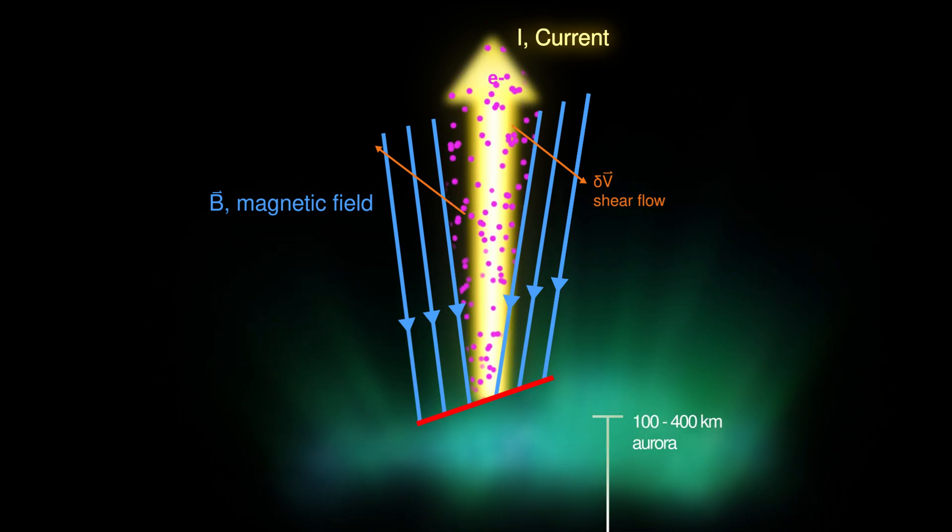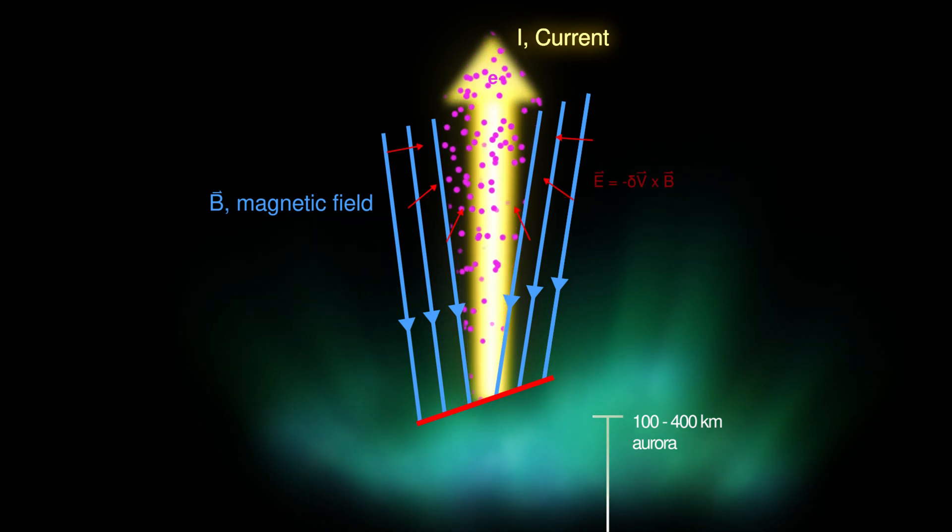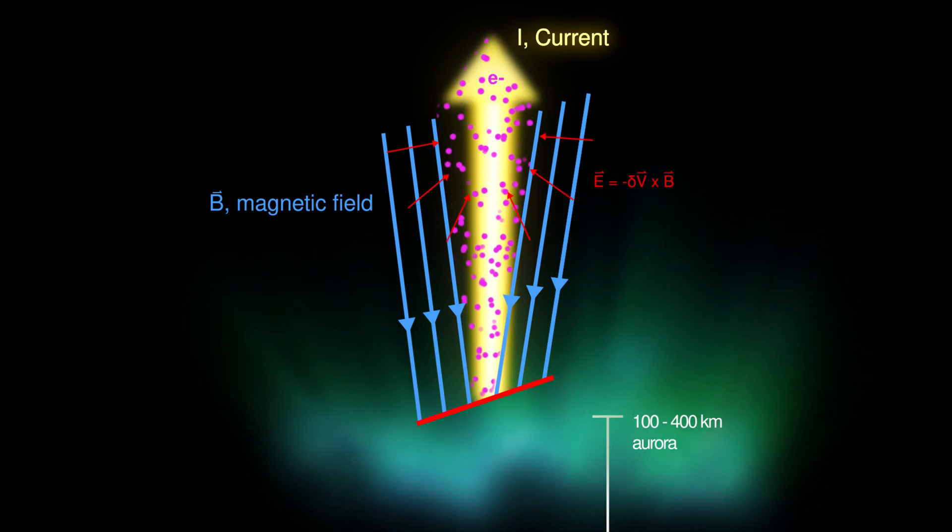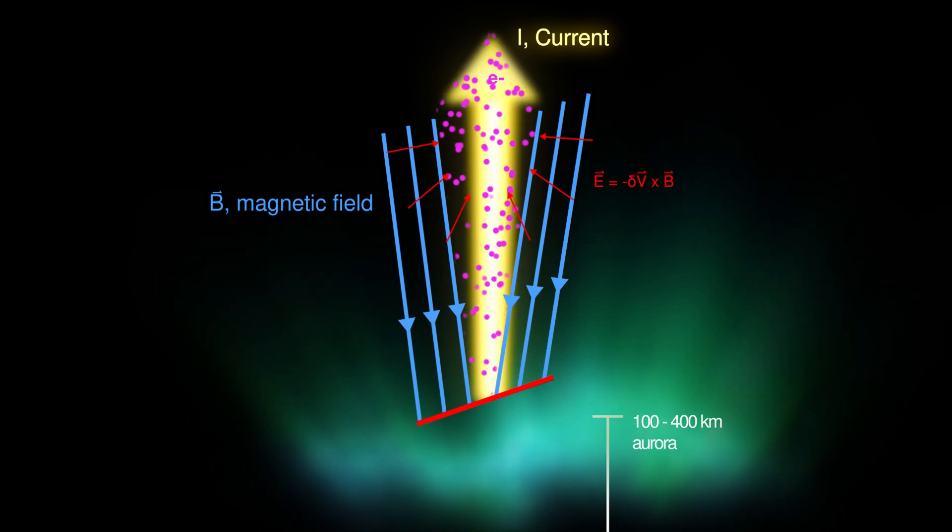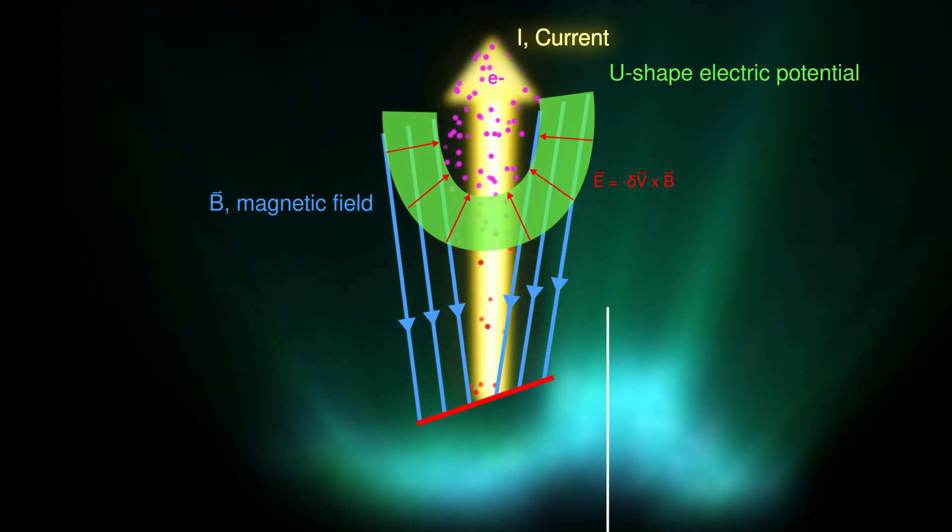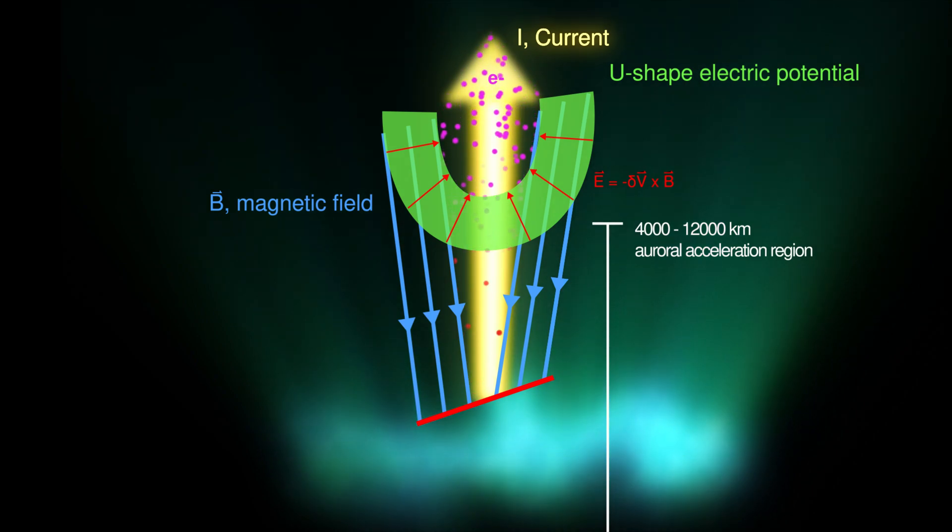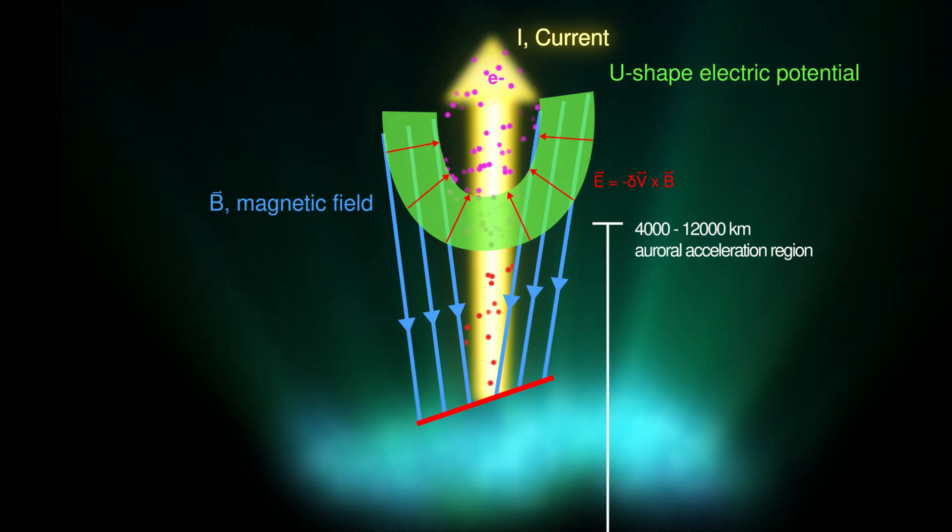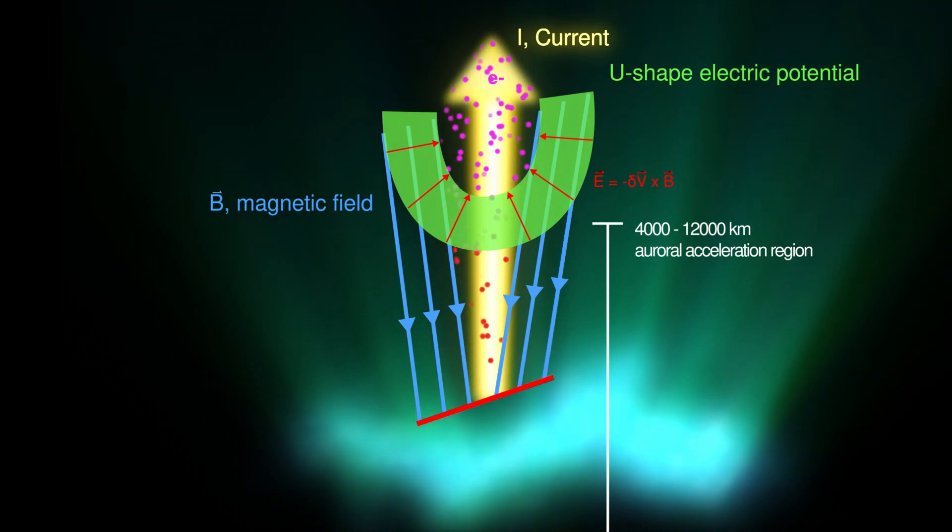Meanwhile, scientists also realize that the same field line dragging effect can generate electric fields pointing toward the current. This electric field causes a band of electric potential that closes at the lower end, spanning altitude from 4 to 12,000 kilometers that is known as the auroral acceleration region, where electrons gain extra boost in energy and velocity, further brightening the aurora.